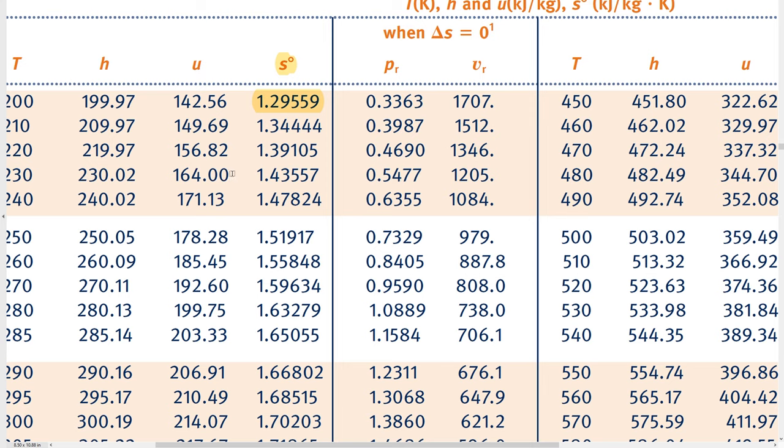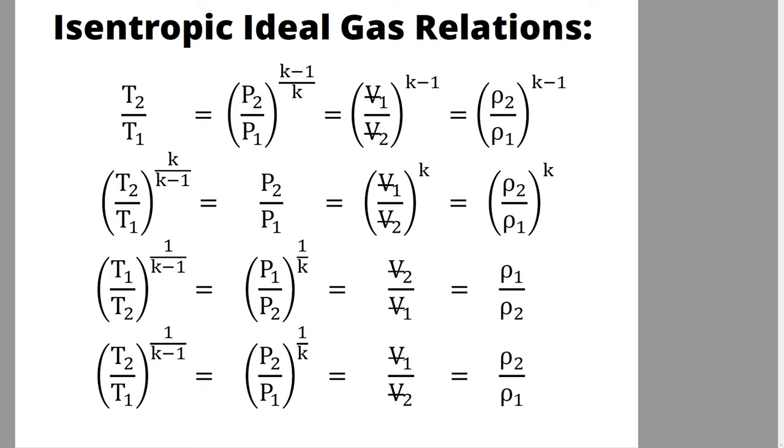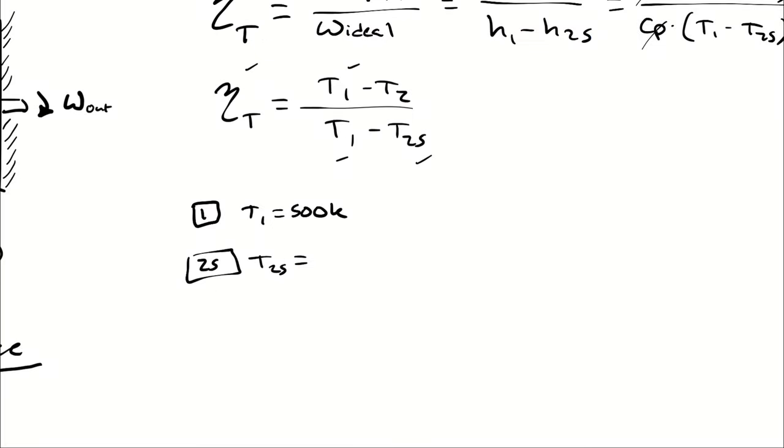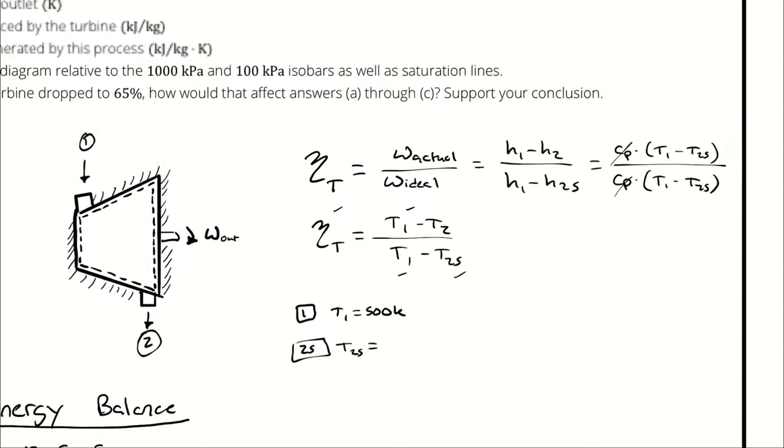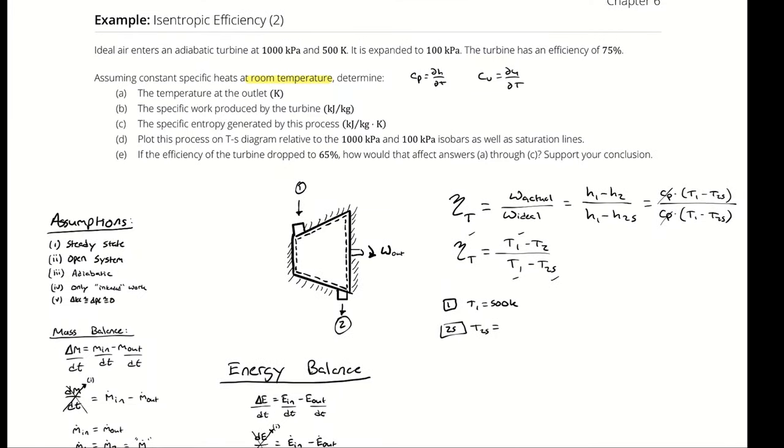What I want you to do instead is use the isentropic ideal gas equations. So we have this set of equations that are only applicable if I have constant specific heats for an isentropic process of an ideal gas. Are all three of those requirements met in this process? Only from 1 to 2S. Not from 1 to 2. Only from 1 to 2S.